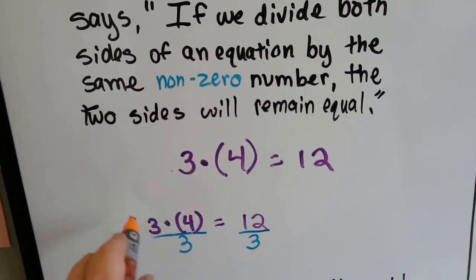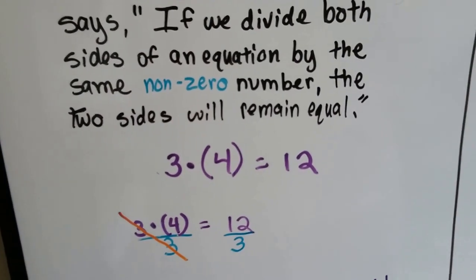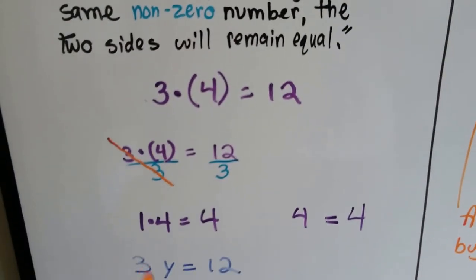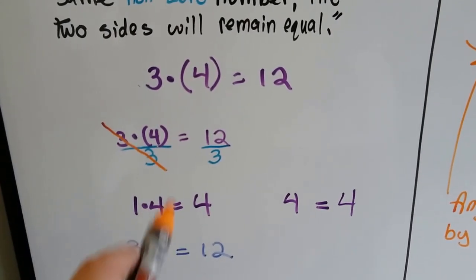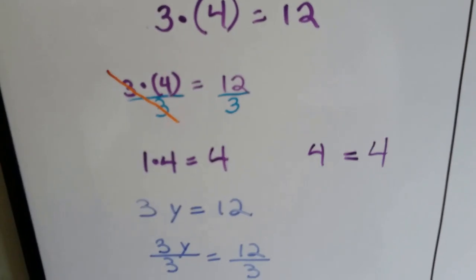what's going to happen is this is going to cancel out this 3, and that's going to turn into a 4, and we're going to end up having a 4 equals 4. So if that was the variable, we'd know the variable was 4.